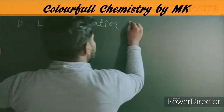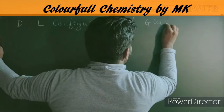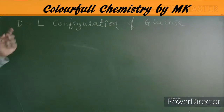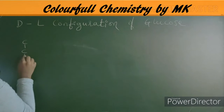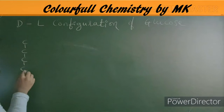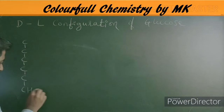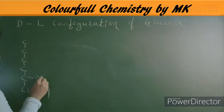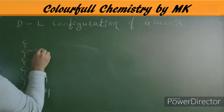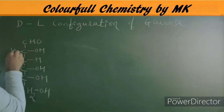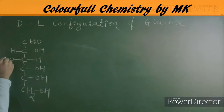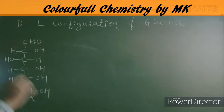Starting with D and L configurations of glucose. D and L configuration can apply to glyceraldehyde, glucose, or fructose. Glucose has six carbon atoms with a CH2OH group, and the structure has OH groups on carbons two through five, with a carbonyl group at carbon one.